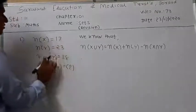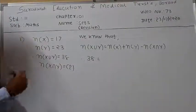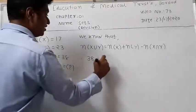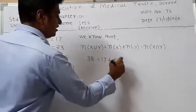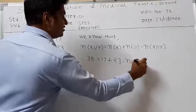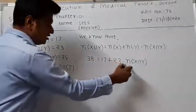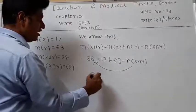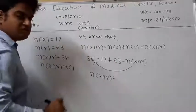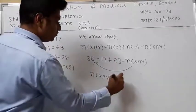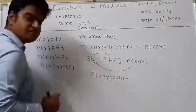So N of X union Y: in place of that we write 38, equal to N of X which is 17, plus N of Y which is 23, minus N of X intersection Y. Bringing N of X intersection Y to the opposite side: 23 plus 17 equals 40, minus 38.